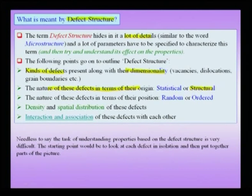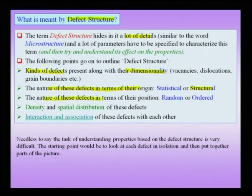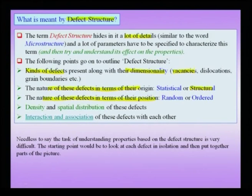We will briefly take up these terms in coming slides. To understand this classification of defects, we need to understand the nature of defects in terms of their position — are they random or ordered — and how properties differ with respect to a single defect. We also need to know the density of these defects, their spatial distribution, and what we call the spatio-temporal evolution of these defects.